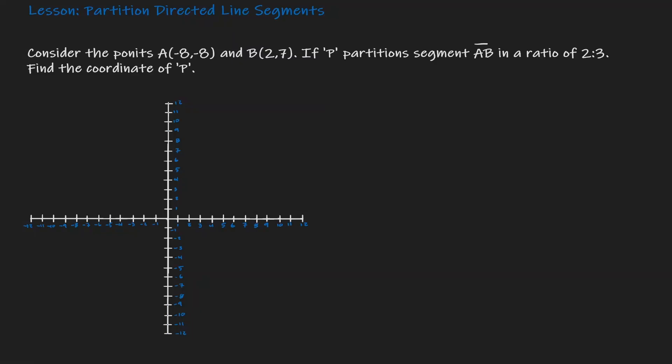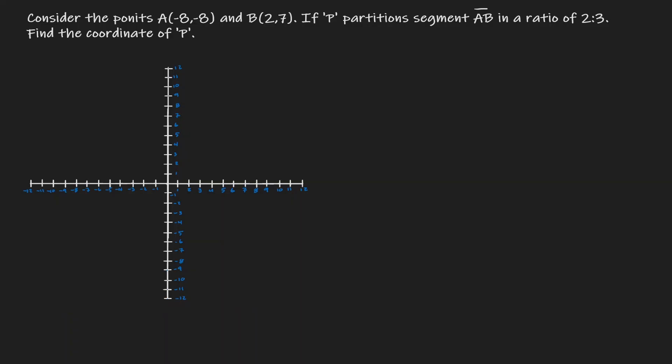Welcome. Today we'll be discussing how to partition a directed line segment. Let's understand what we are given. We are given two coordinate points: negative 8 comma negative 8, and 2 comma 7.